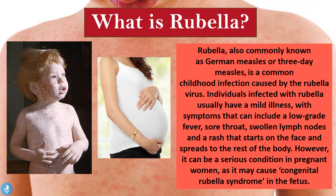Rubella, also commonly known as German measles or three-day measles, is a common childhood infection caused by the rubella virus. Individuals infected with rubella usually have a mild illness with symptoms that can include a low-grade fever, a sore throat, swollen lymph nodes, and a rash that starts on the face and then spreads to the rest of the body. However, it can be a very serious condition in pregnant women, as it may go on to cause congenital rubella syndrome in the developing fetus.